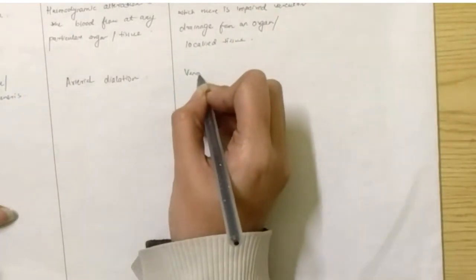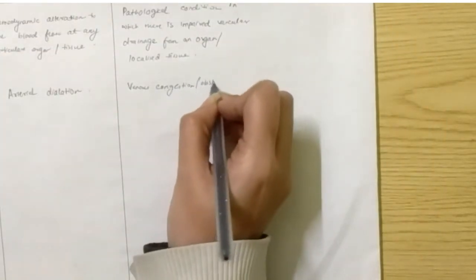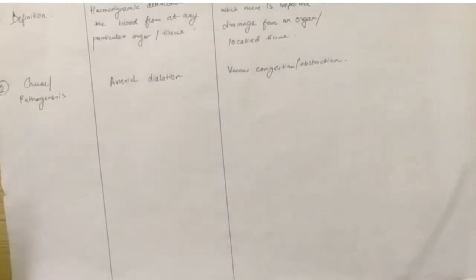Venous congestion or venous obstruction is the cause of congestion because if the veins do not drain the amount of blood appropriately, then the blood will accumulate in that concerned tissue or organ.